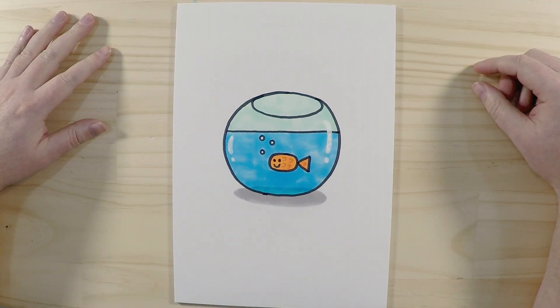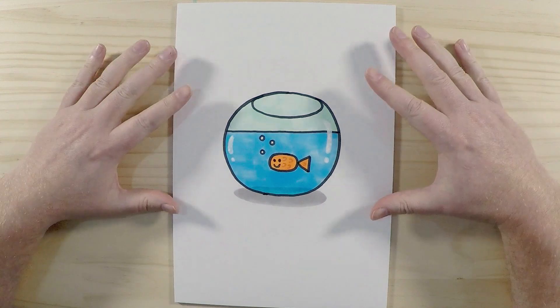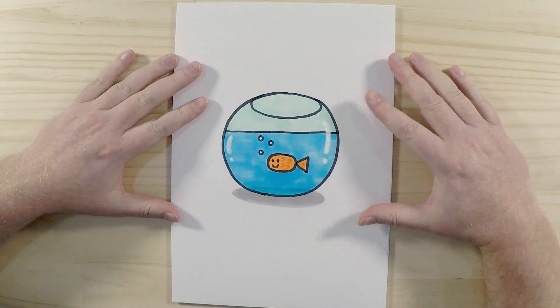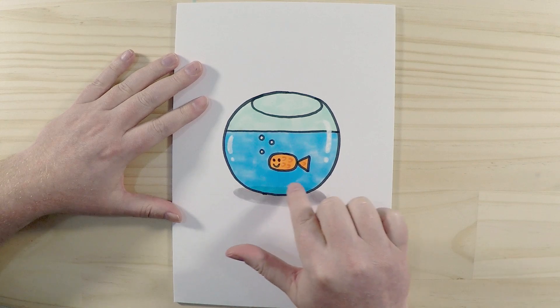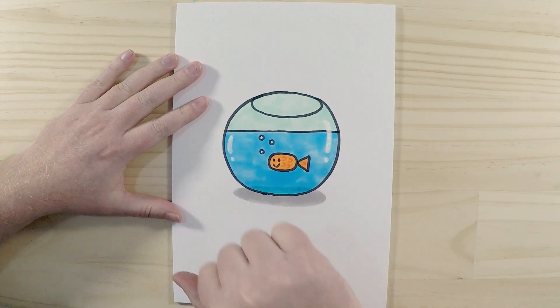And we're back. So we've finished coloring Goldie. I think it looks great. Now it's a very simple character. So you can add other details. Maybe add some sand or rocks on the bottom or some plants.